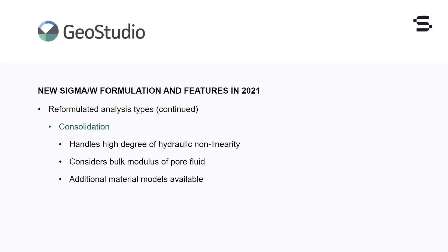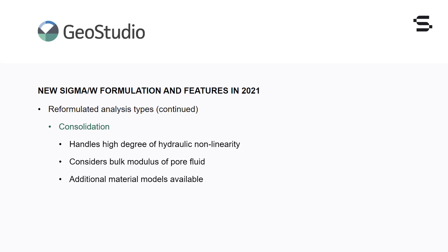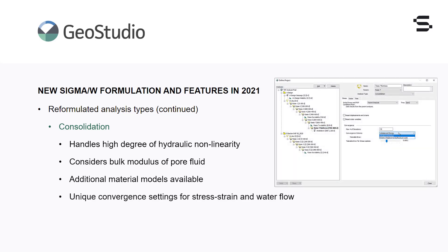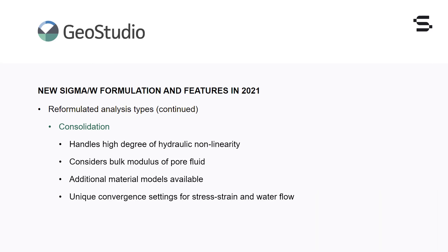All stress-drained material models can be used in a consolidation analysis and the unsaturated response is handled in a consistent manner. In addition, a saturated-only hydraulic material model is now available, making it easier and faster to define the hydraulic properties for consolidation problems involving saturated soils. Convergence settings are now uniquely defined for stress-strain and water flow analyses. This allows for the modification of convergence requirements to cope with hydraulic non-linearity without affecting the number of iterations required to deal with the stress-strain non-linearity, meaning the new Sigma W consolidation analysis type can model complicated flow systems with the same rigour as SEEP-W.